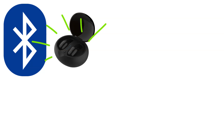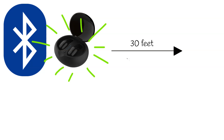Bluetooth devices emit low levels of non-ionizing radiation because Bluetooth waves don't travel very far. In fact, most Bluetooth devices typically have a maximum connectivity range of only 30 feet or 9 meters. This distance is also reduced when walls and other obstacles are present.